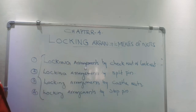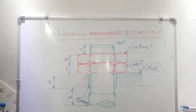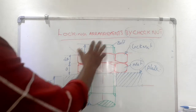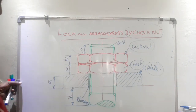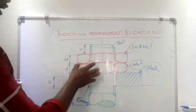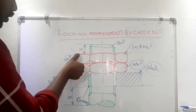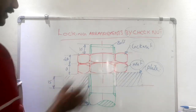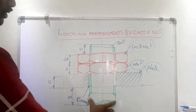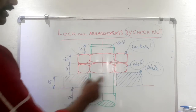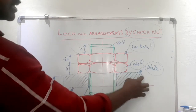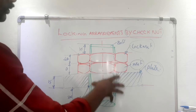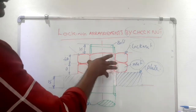The first locking arrangement is the locking arrangement by check nut. This figure shows several parts. One is the locking nut — the smaller nut is called the locking nut. The larger nut is called the normal or ordinary nut. The green colored line is the line diagram of the bolt. The sectional area shows the plate. That means a plate is bolted by means of a bolt and two nuts.